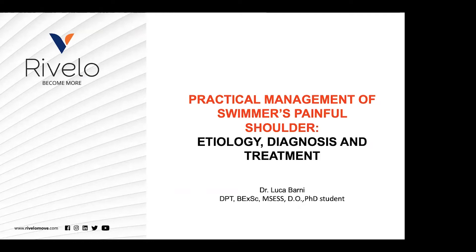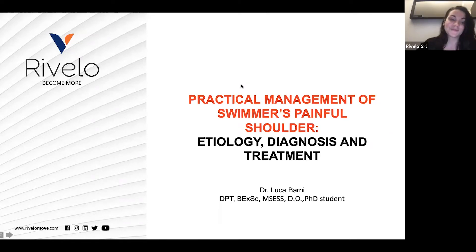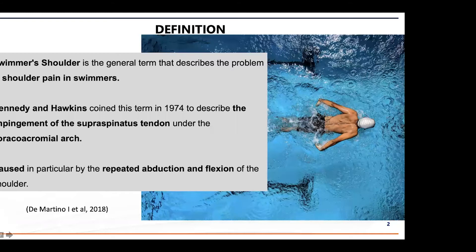Thanks, and thanks to all the participants attending the webinar. We are going to talk about the swimmer's painful shoulder. We start with the definition: swimmer's shoulder is the general term that describes the problem of shoulder pain in swimmers. Kennedy and Hawkins coined this term in 1974 to describe the impingement of the supraspinatus tendon, caused particularly by repeated abduction and flexion of the shoulder.